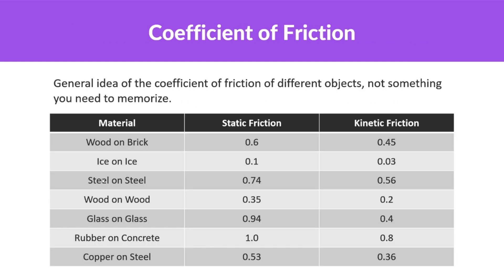Here's a general idea of the coefficient of friction for different objects — not something you need to memorize. Mu, the coefficient of friction, doesn't have any units and is almost always under one. Wood on brick: static friction coefficient is about 0.6 and kinetic is about 0.45. Copper on steel: static is 0.53 and kinetic is 0.36. Notice that the coefficient of static friction is almost always greater than kinetic friction.